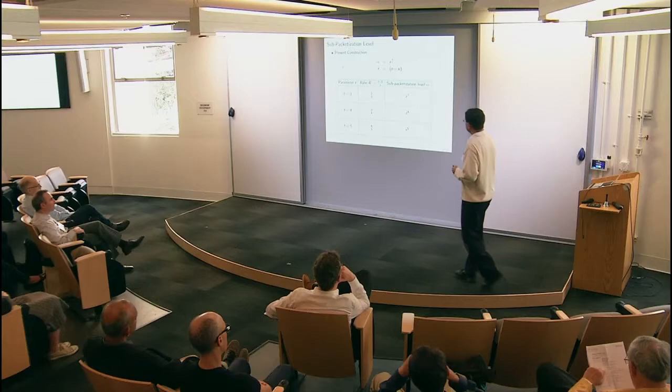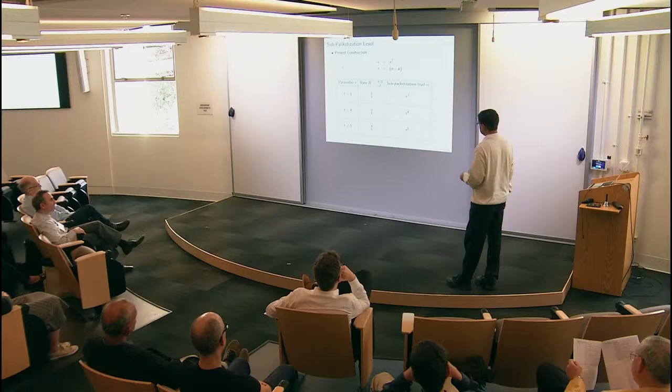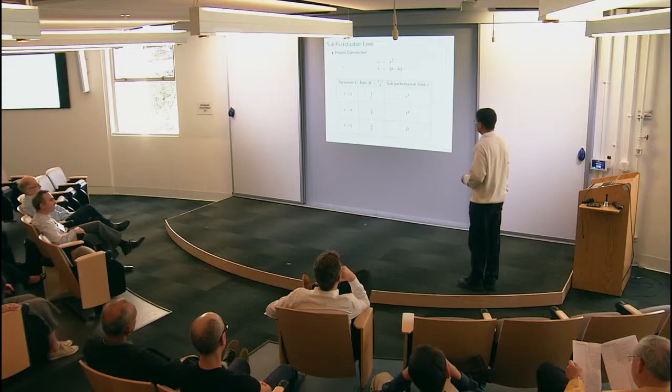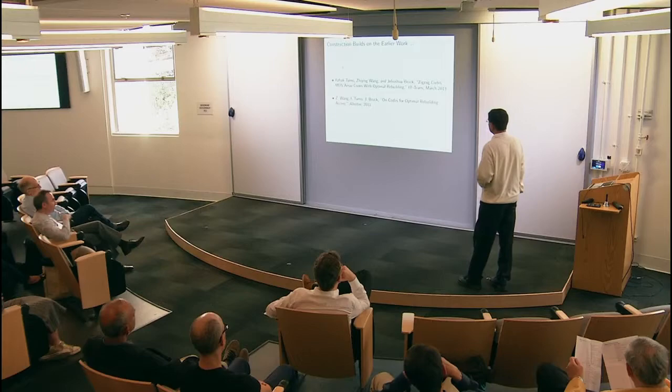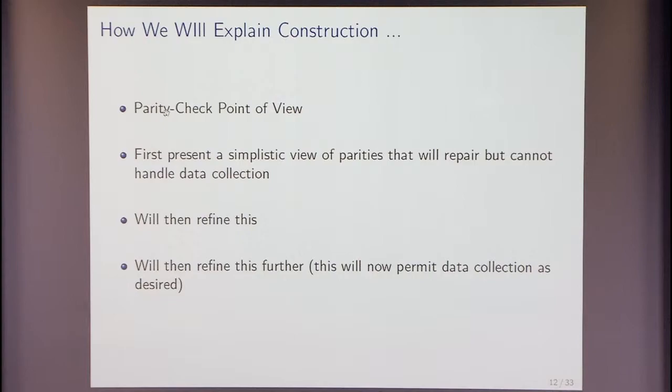So, in the present construction, what we have is alpha is r to the n by r, and there's a parameter in this construction t. So, we are able to provide constructions of the form where the rate is t minus 1 upon t, so it's two-thirds, three-fourths. And the thing is that the packetization is r cubed, r fourth, r fifth. And so, that's just a quick overview of what we will do. So, the construction does build a lot on this earlier work. So, we actually draw a lot of the ideas from this earlier work.